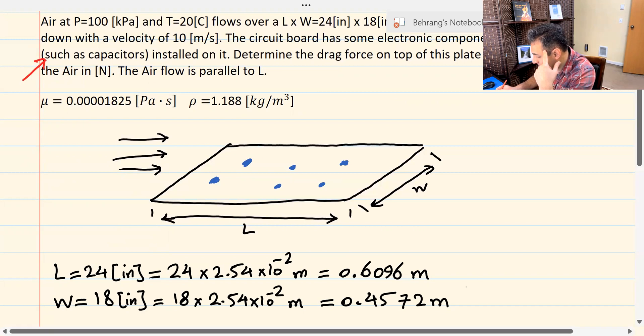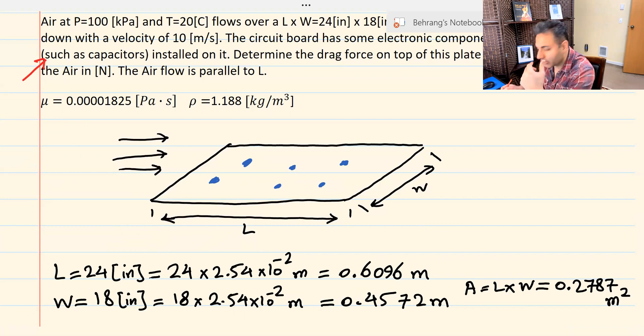That's good. Based on this, I can even calculate the area, which I'm going to need later, that would be L times W. So if you calculate L times W, multiply these two, you're going to get some number like 0.2787 meters squared, something like this. So we're going to need this later, because we want to calculate the drag force.